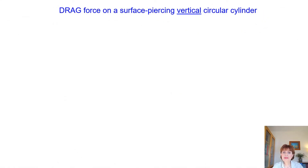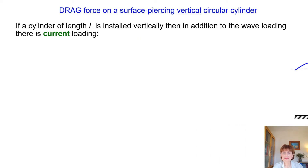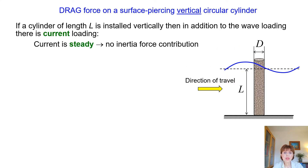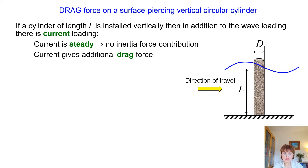If a cylinder of length L is installed vertically, then in addition to the wave loading, there is C-current loading. Let's consider steady C-current with direction of travel from left to right. We have a vertically installed cylinder on the seabed — for example, a cylinder of an offshore wind turbine with diameter D and length L from the seabed to the seawater level. We have steady C-current, therefore no inertia force contribution from the C-current. But the C-current gives additional drag force. Therefore, the drag force on the cylinder includes two components: wave-induced drag plus C-current drag.